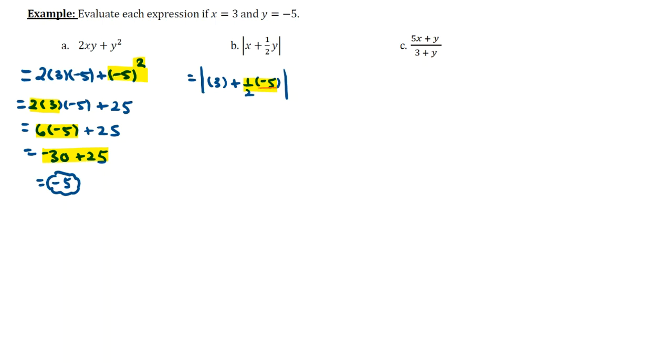Something that might make this a little easier is to write the negative 5 as being over 1 because this now looks like multiplication of two fractions, in which case you multiply tops and bottoms together. So we're looking at the absolute value of 3 plus negative 5 over 2.